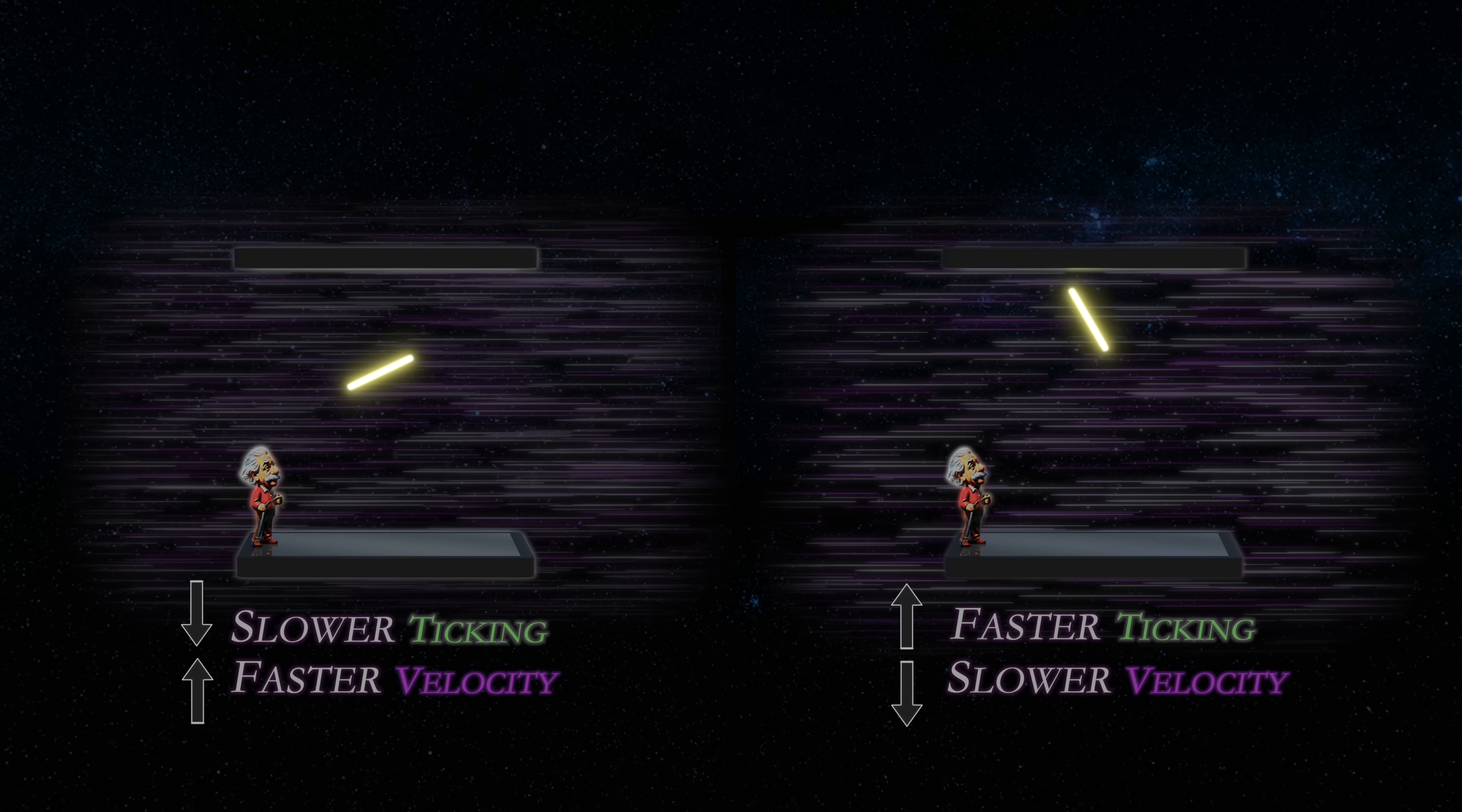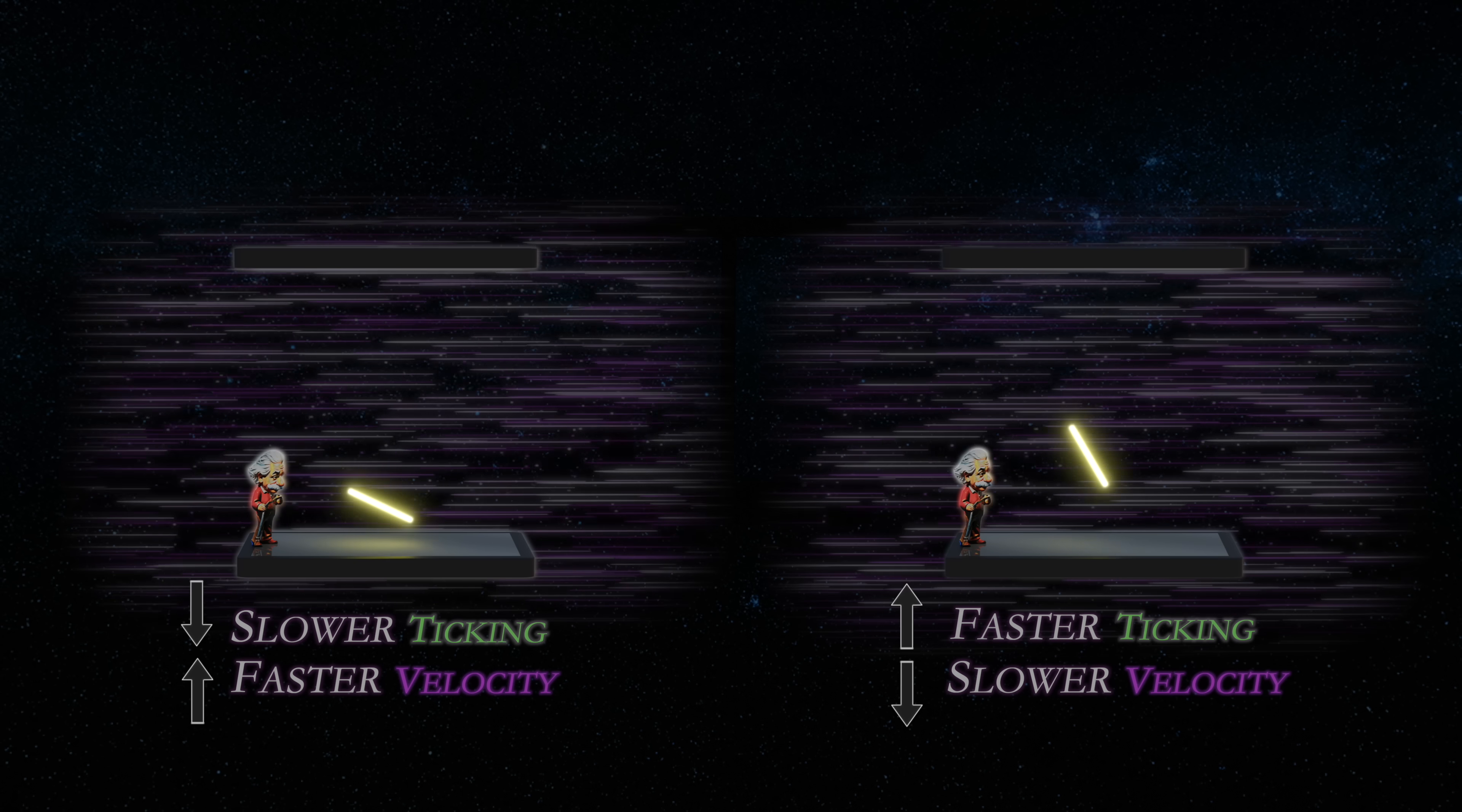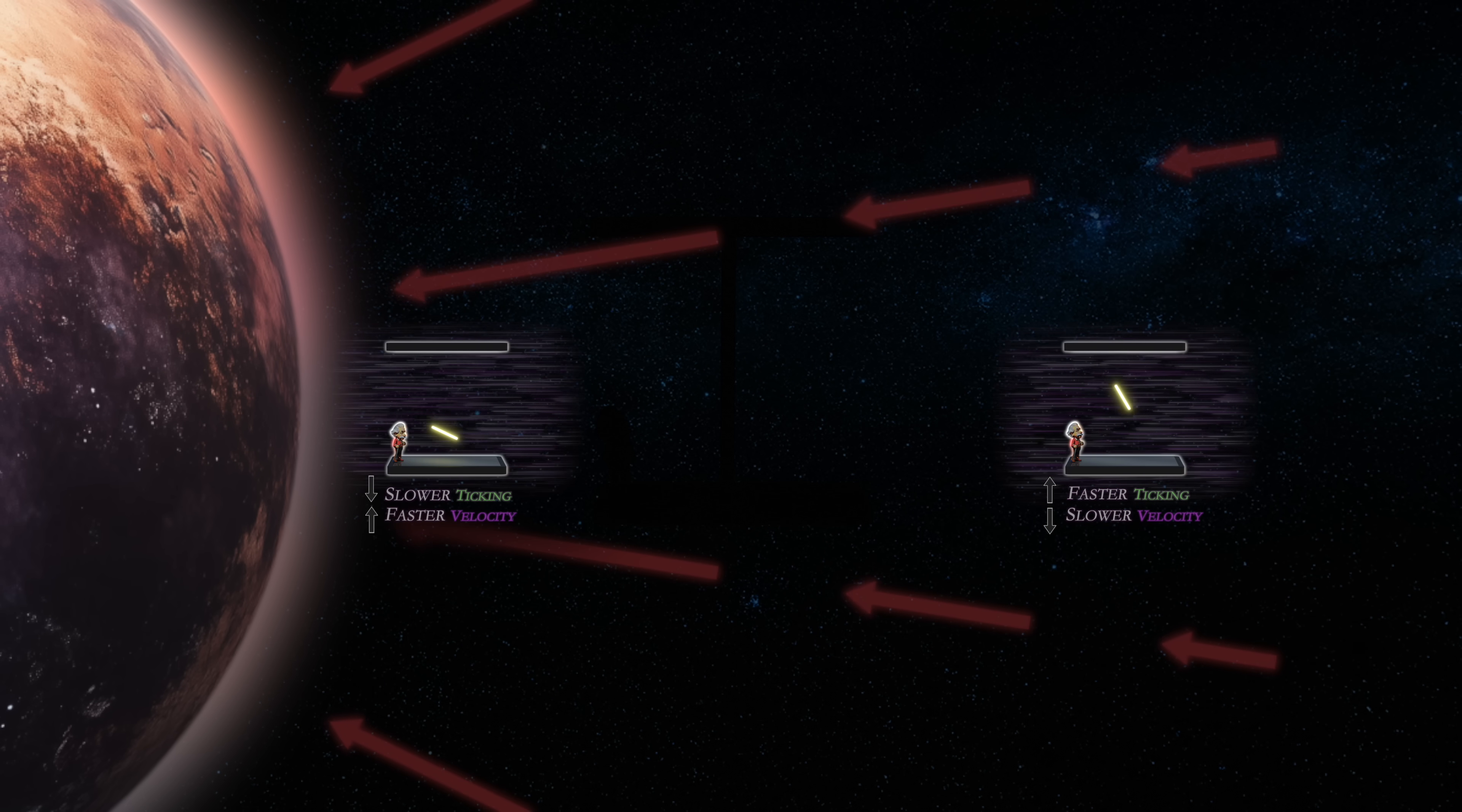Now, a crucial aspect of spacetime curvature relates to how clocks which are stationary further down in a gravitational field will tick more slowly than clocks which are higher up.